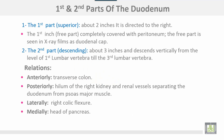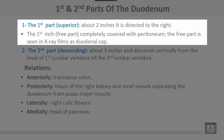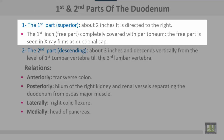Starting with the first part — superior and about two inches — it is directed to the right side. The first inch is the free part because it is completely covered with peritoneum. The free part is seen in X-ray films as the duodenal cap.